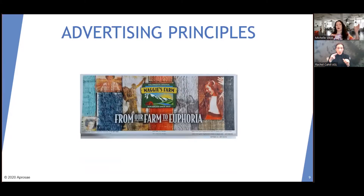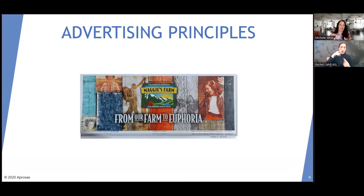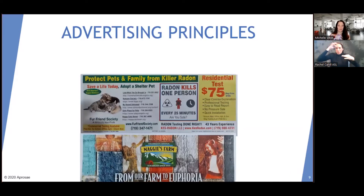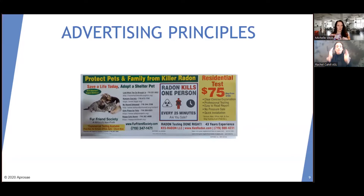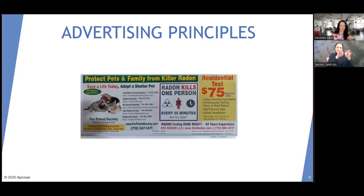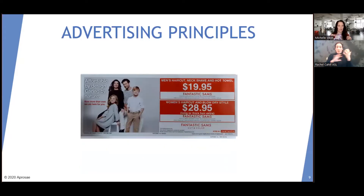Maggie's Farm is a pot ad for marijuana — but you wouldn't know that. All it is is a logo and 'from our farm to euphoria.' If I didn't know that, I wouldn't know what this is — not good. The radon ad says 'protect pets and family from killer radon,' then has a yellow box with a bulleted list, prices, radon statistics, and another box about adopting shelter pets — too much, too much. It doesn't have one call to action.